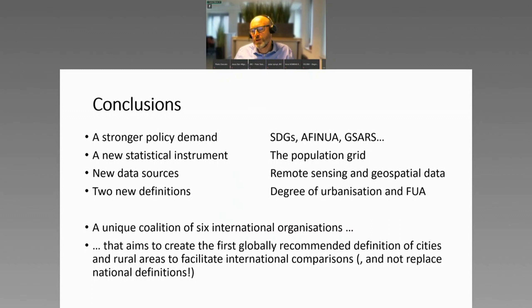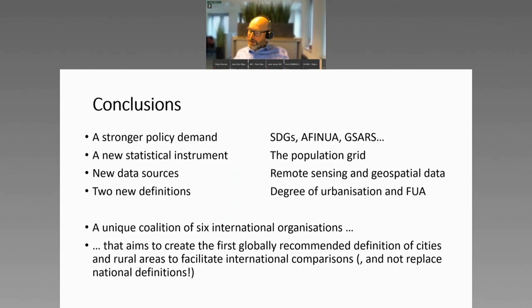We came up not just with a recipe of how to define urban — we actually implemented that recipe with our own estimates to show it's probably going to look something like this. Obviously our estimates are approximations; we would need better data, better grids, especially better population data. But having that remote sensing data and those estimated population grids made all the difference in the world. It was quite a challenge to keep six international organizations agreeing, but we managed, and now we're working on implementation and will report back to the UN in the years to come.